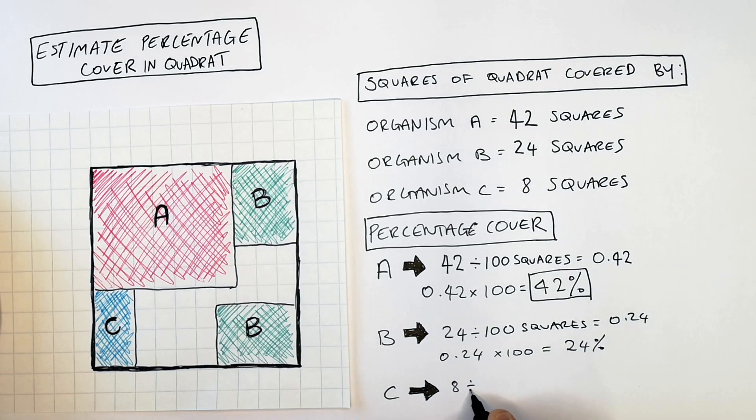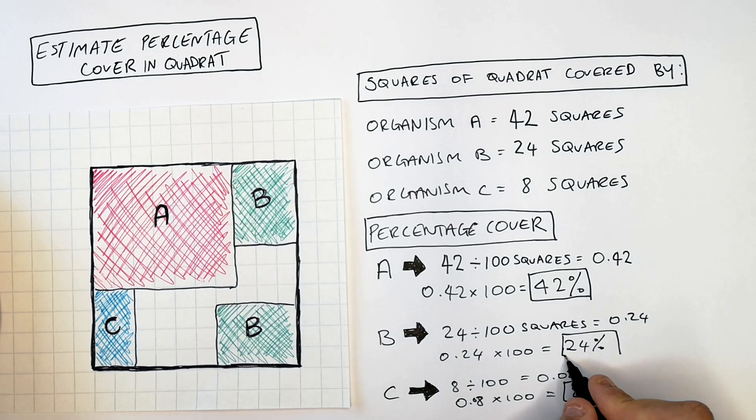The last one is 8 divided by 100 which is 0.08. Then you times that by 100 and you've got 8% percentage cover within the quadrat.